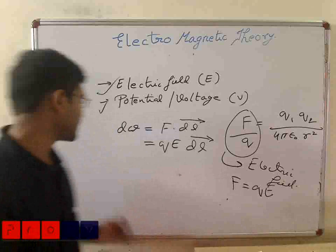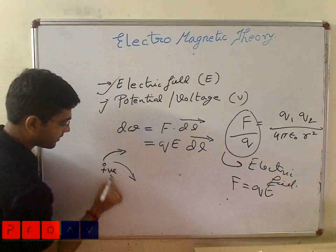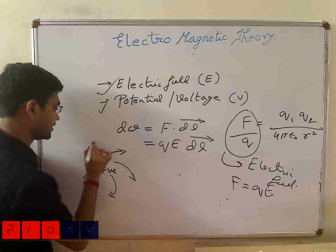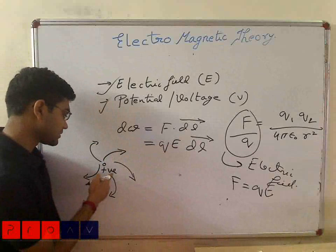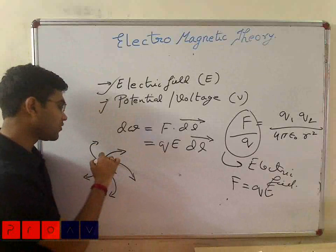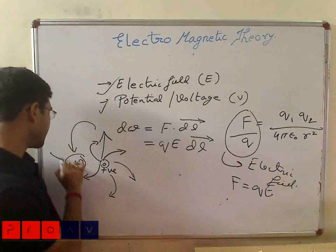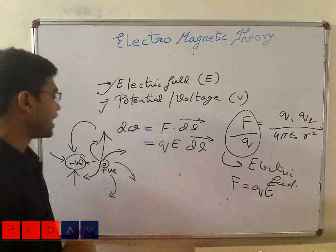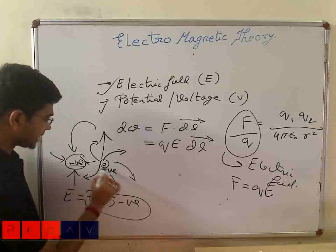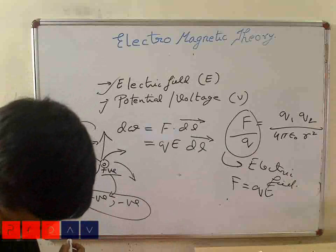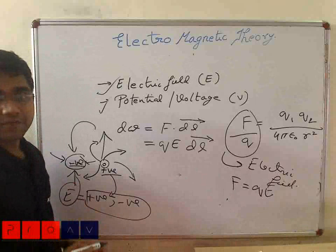Our electric field can either be positive or negative depending on the charge at the center. Since the direction of the field determines sign, we can say electric field is a vector quantity. The work integral would be a dot product of the two vectors. So my total work W will be Q into the integral of E dot dr, and voltage V = W/Q = ∫E·dr.